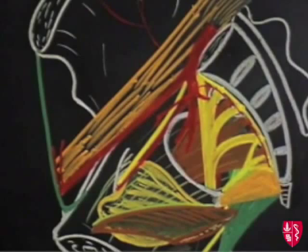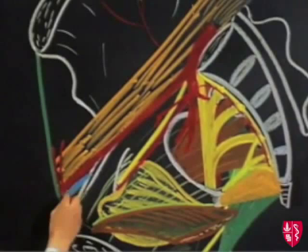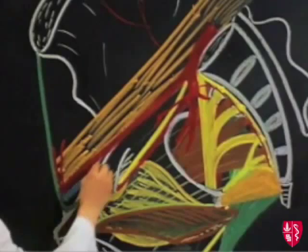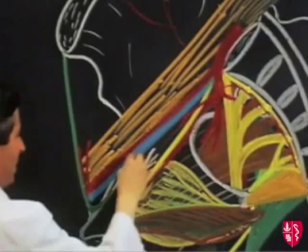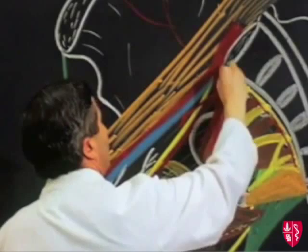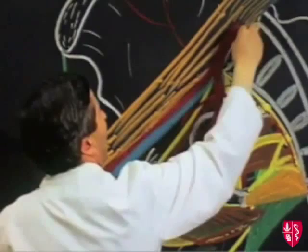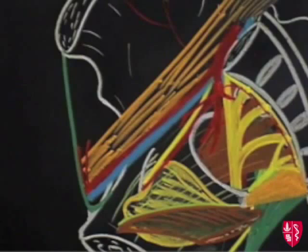Let us now turn to the pelvic brim region and put in the external iliac vein. The external iliac vein is a continuation of the femoral vein at the level of the inguinal ligament, passing up on the medial side of the external iliac artery, and it will unite with the internal iliac vein to form the common iliac vein, passing upwards into the abdominal cavity.